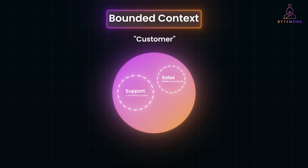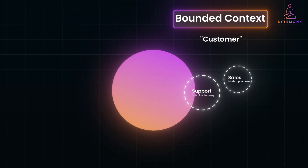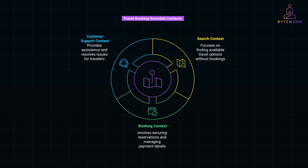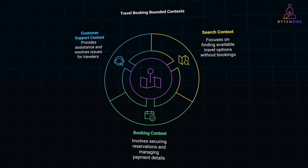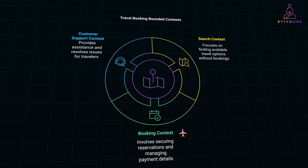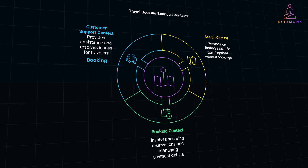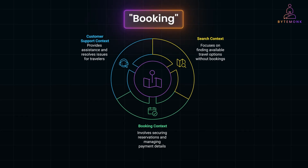The idea behind a bounded context is to define clear boundaries for where a specific model and language apply. Within a travel booking platform, different departments or functions have their own perspectives on how the system works. Without boundaries, terms like 'booking' or 'customer' can create confusion. In the search context, it focuses on helping users find available flights, hotels, or rental cars — the term 'booking' doesn't exist here; the focus is on search results, availability, and pricing. Once the user selects a flight or hotel, the booking context takes over. Here, 'booking' refers to securing the reservation — it includes payment status, confirmation numbers, and cancellation policies. And for customer support, 'booking' means something different: it includes the customer's interaction history, change requests, or issues with the reservation. Each context uses the term 'booking,' but the meaning changes depending on the scope.